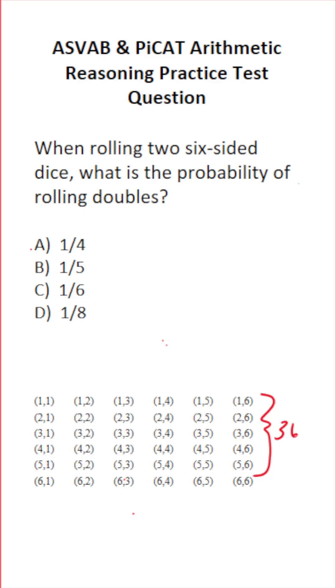So to find the probability, 36 is going to be our denominator. Now, what does this problem mean by doubles?